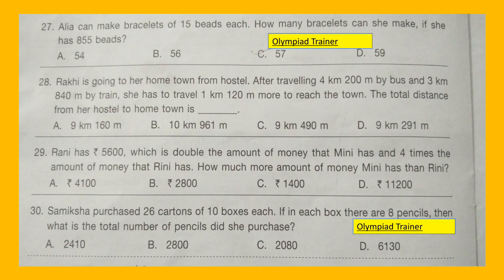Question 29: Rani has Rs. 5600, which is double the amount of money that Minnie has and 4 times the amount of money that Rini has. How much more money does Minnie have than Rini?